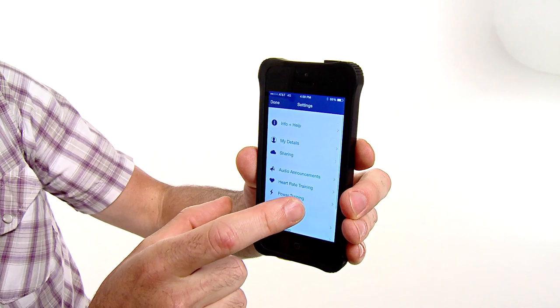This mounts to your handlebar just like every other bicycle computer does, but it uses your phone as the processor and GPS locator. It's a genius idea, and Wahoo has executed it flawlessly.